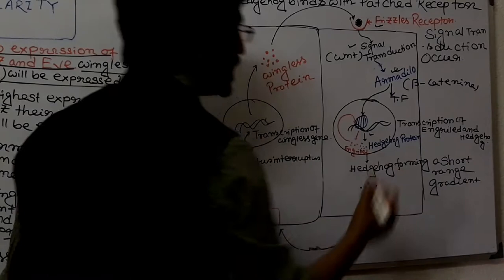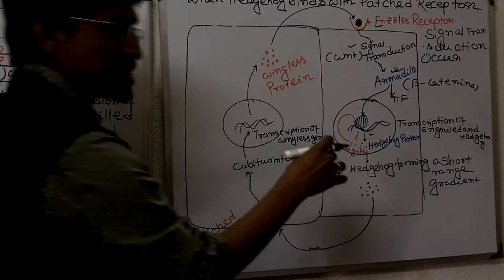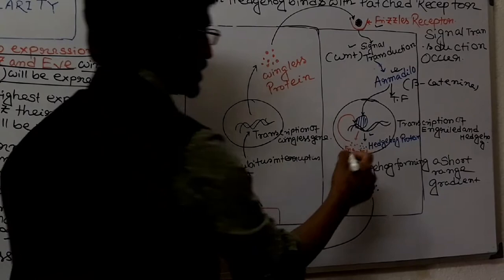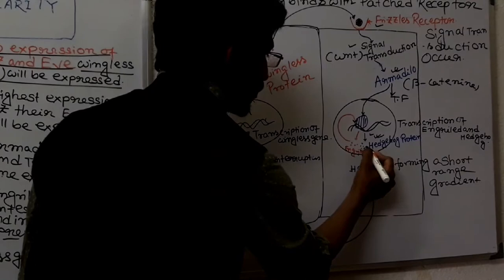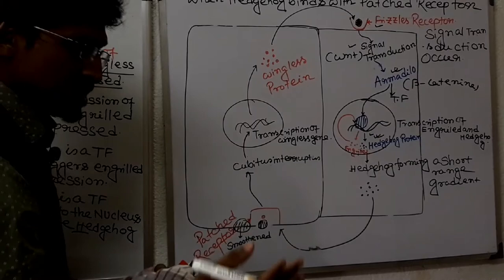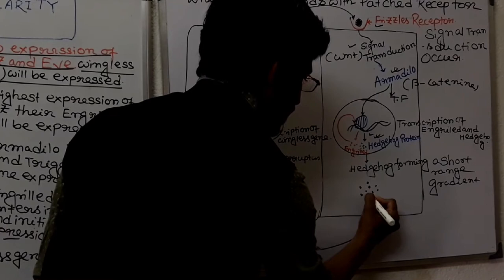After transcription and translation, the engrailed protein is produced. Engrailed also activates its own auto-regulation, initiating its own transcription and also initiating hedgehog transcription. Then hedgehog protein is produced after transcription and translation.